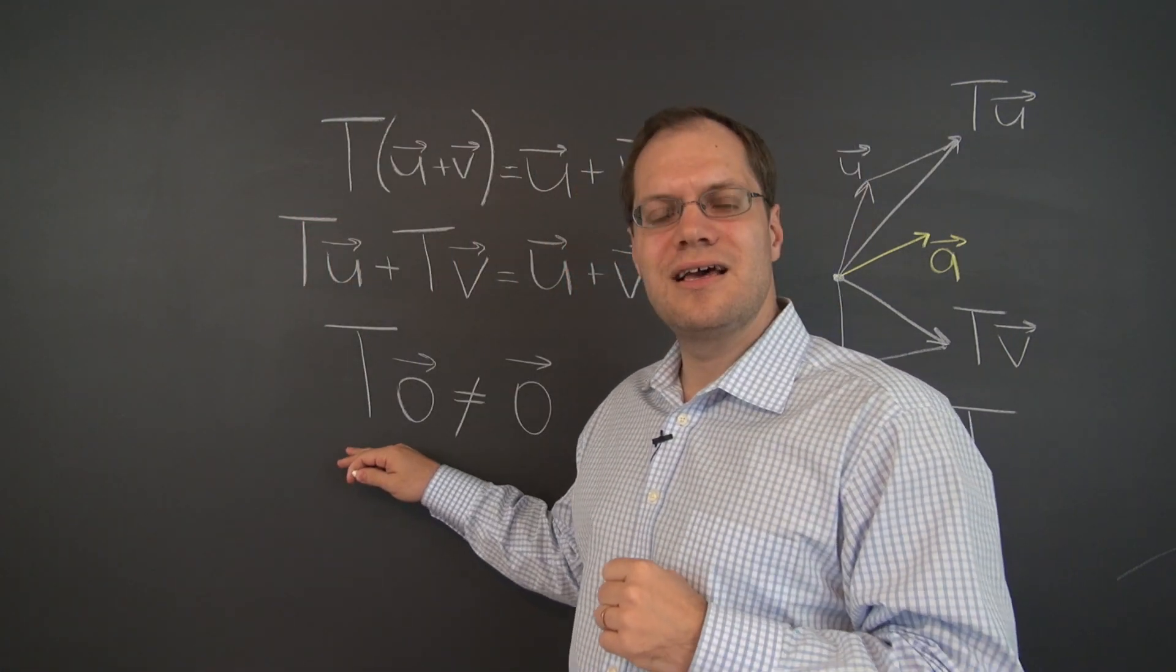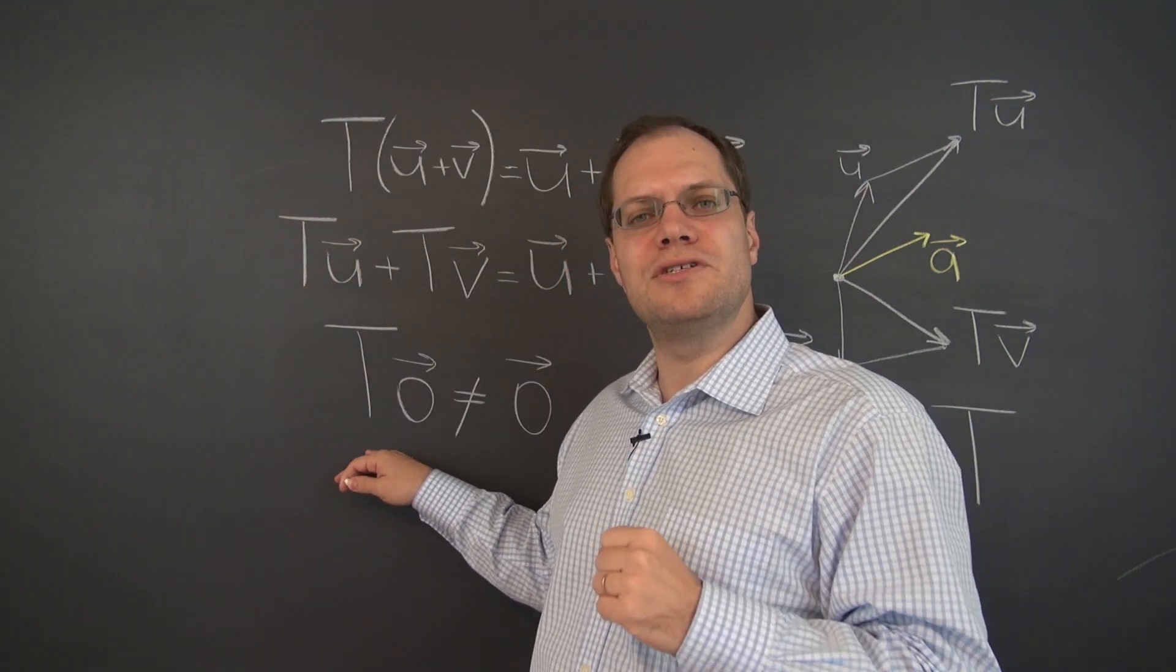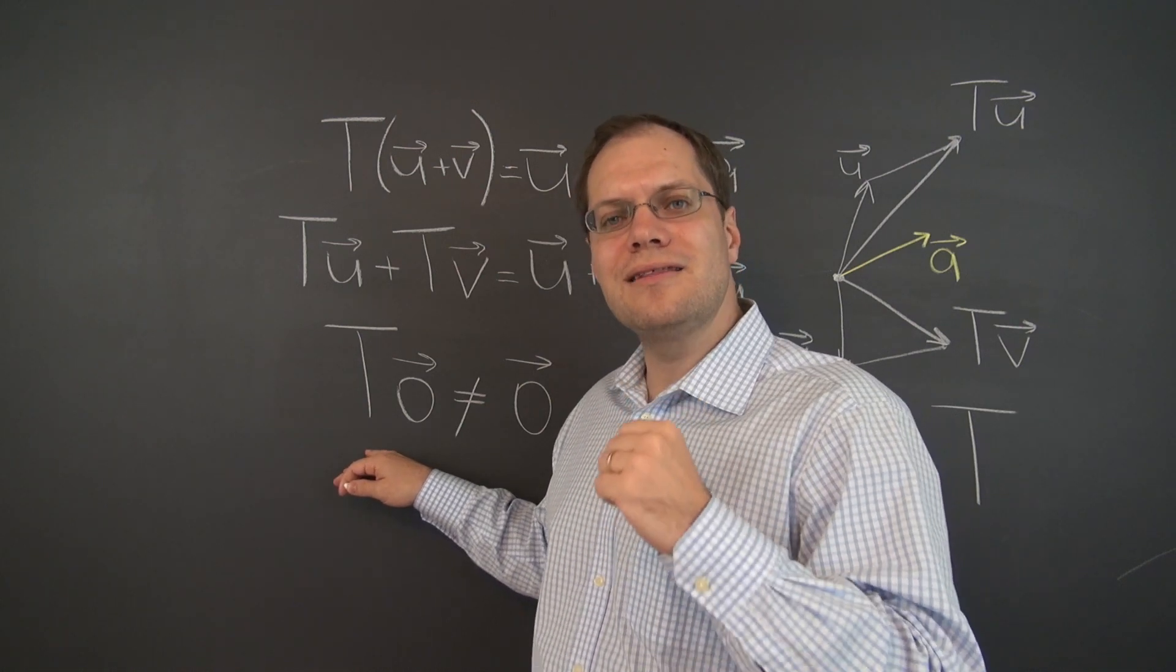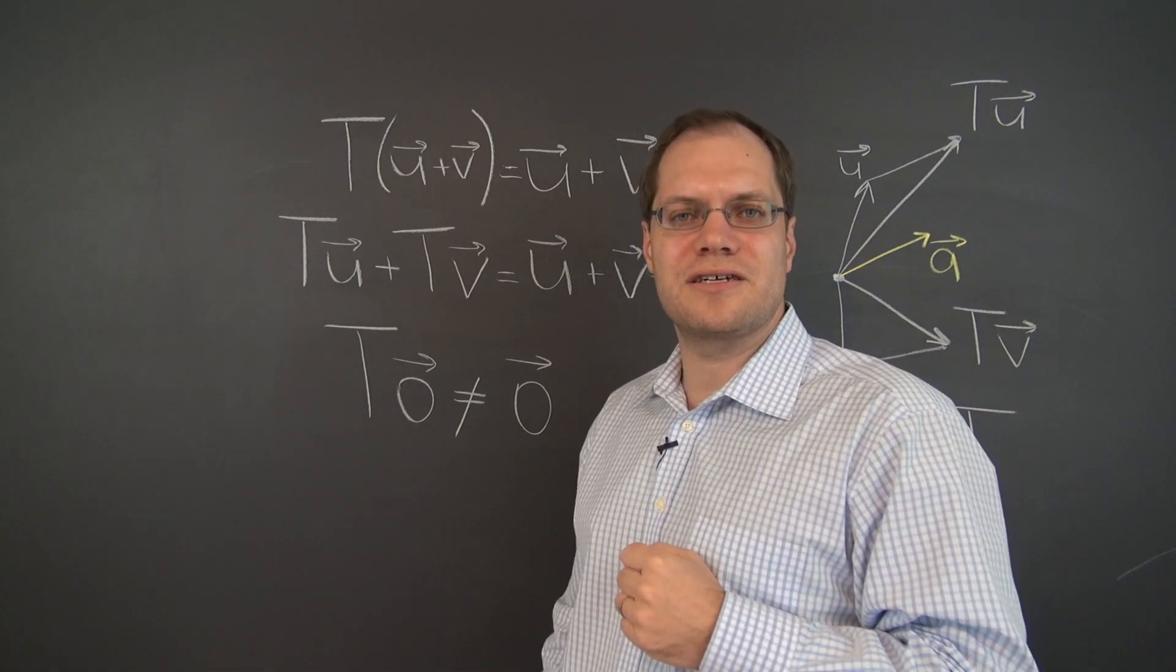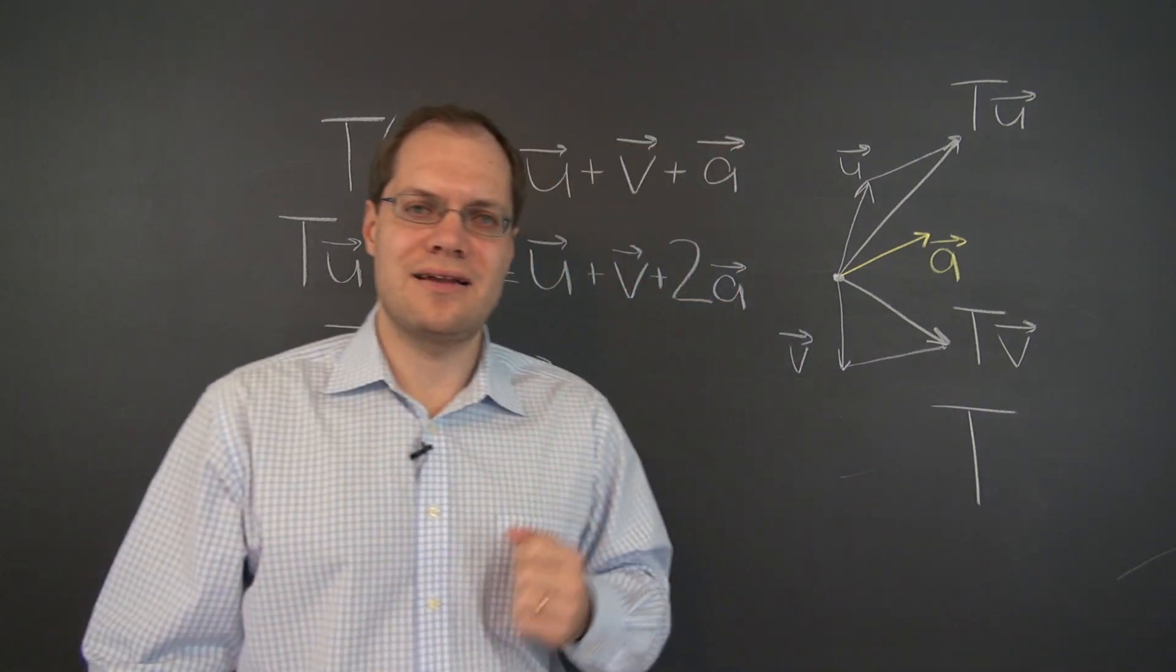I invite you to think of this as a mathematical theorem and prove it to yourselves. That for any linear transformation, the image of the zero vector is the zero vector. This one fails it and it's not linear.